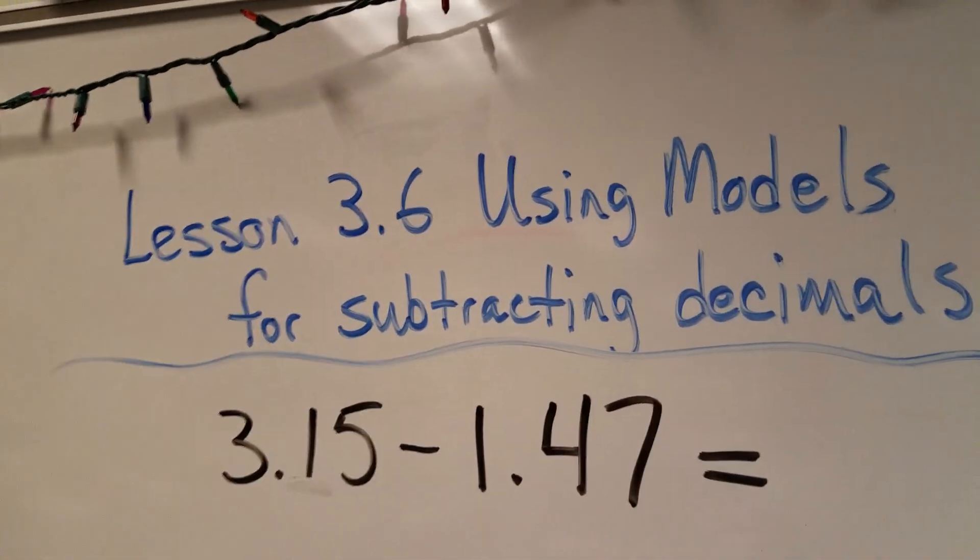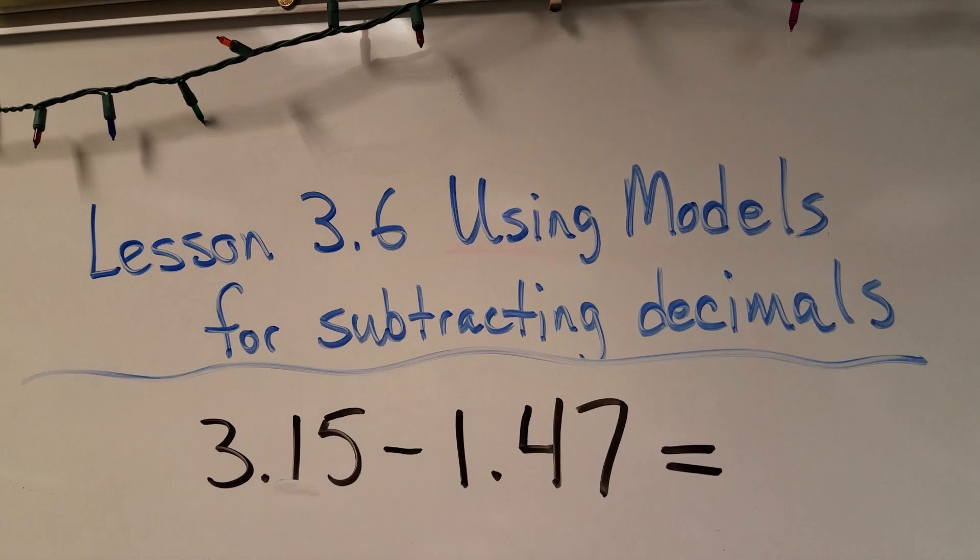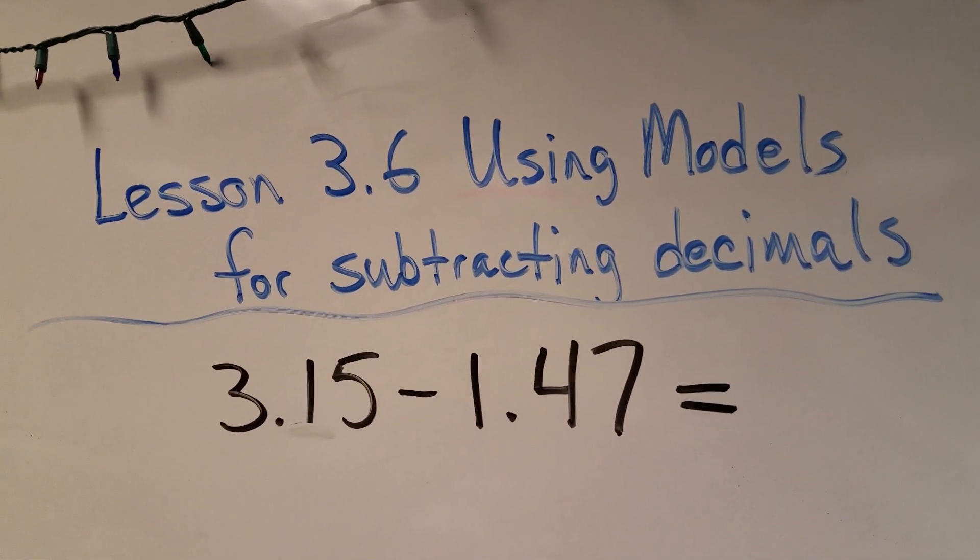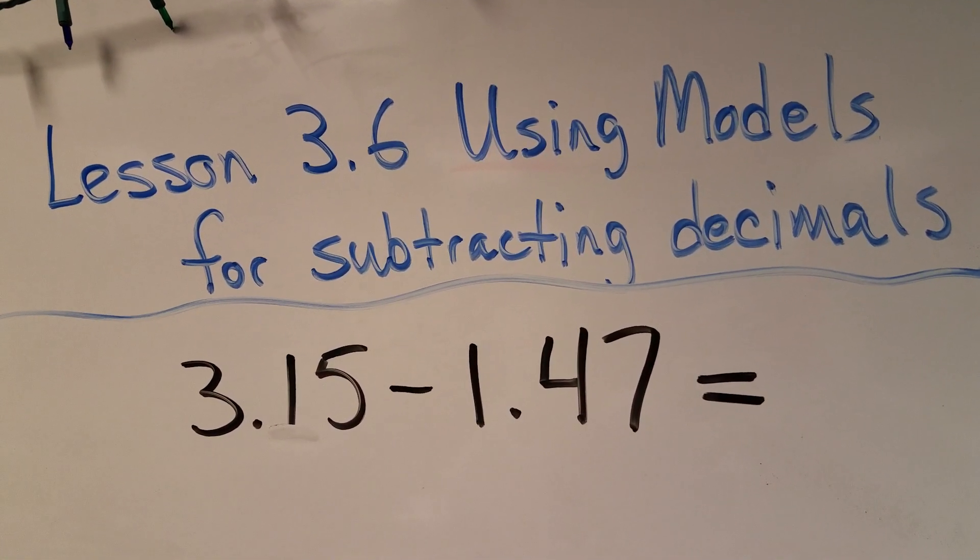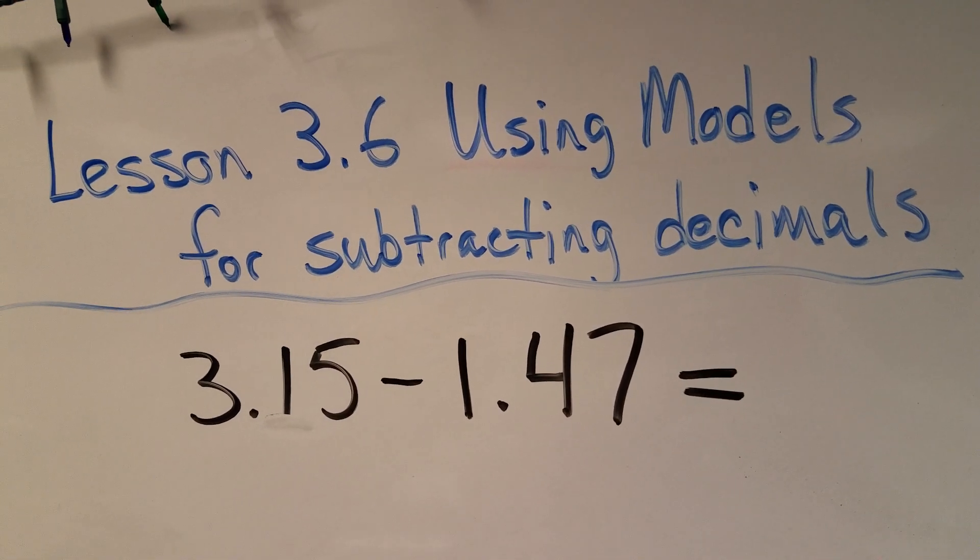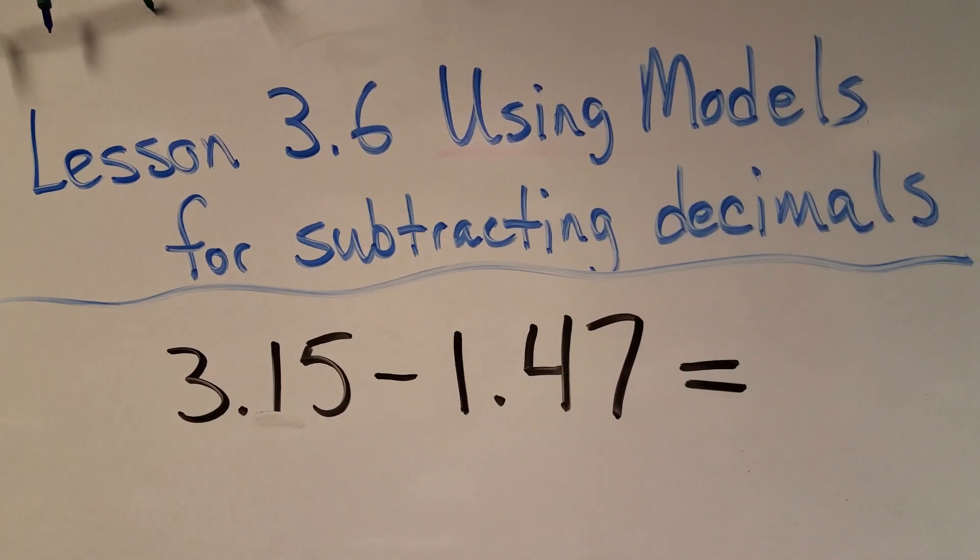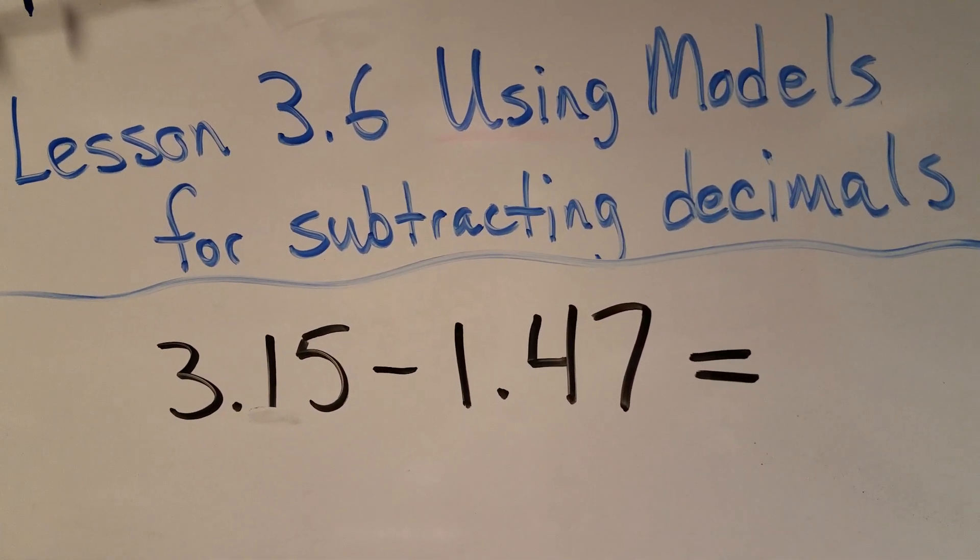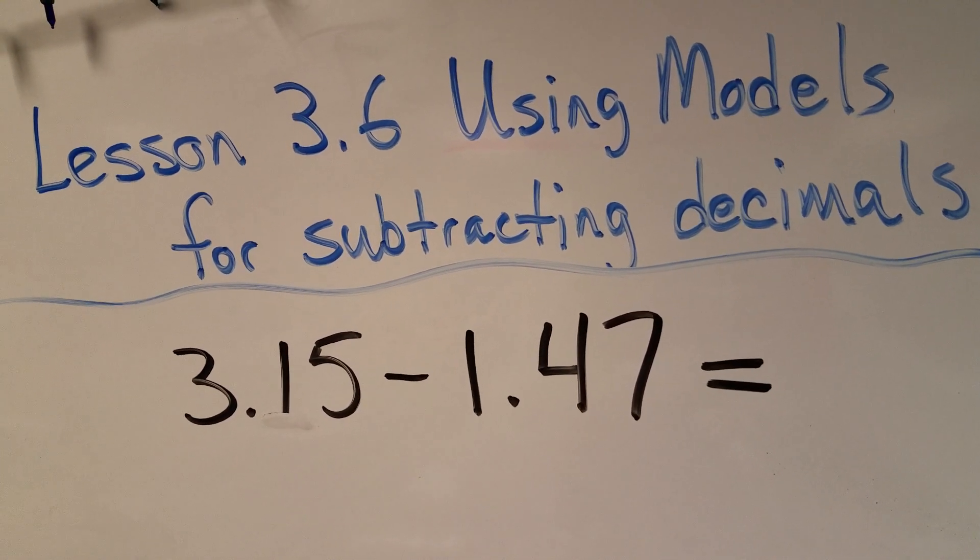All right, welcome to lesson 3.6 using models for subtracting decimals. Here is our problem: 3 and 15 hundredths minus 1 and 47 hundredths. We are going to use models to show how to finish this problem.